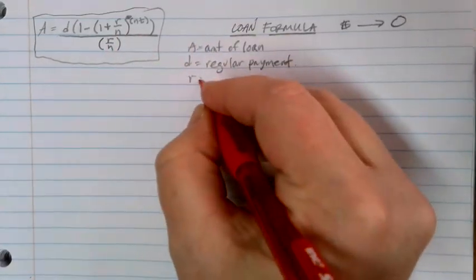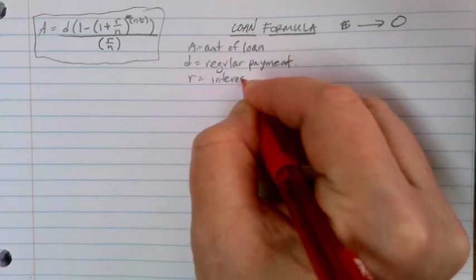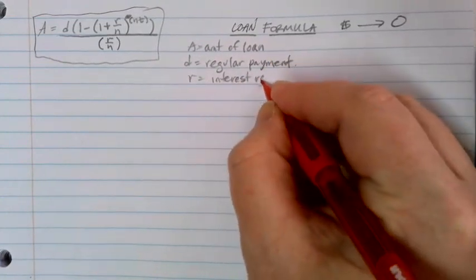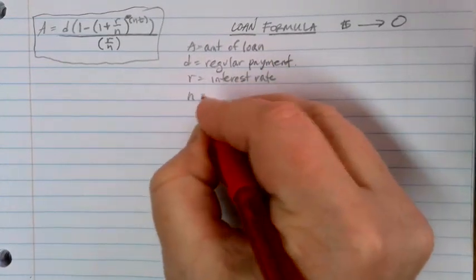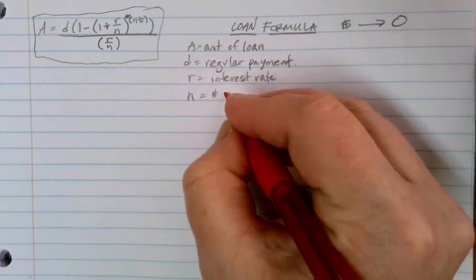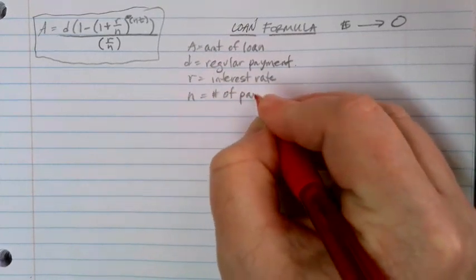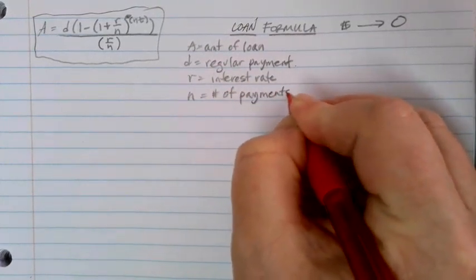R is our interest rate, of course, in decimal form. N is the number of compounding periods per year, or the number of payments per year if you want to think of it that way.